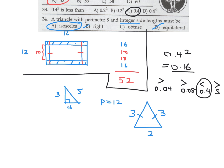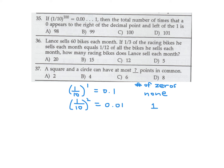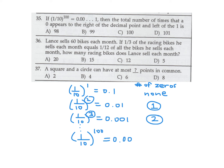1 over 10 to the 100th power — how many zeros appear to the right of the decimal point and left of the 1? Using pattern recognition: 1/10^1 is 0.1 (zero zeros), 1/10^2 is 0.01 (one zero), 1/10^3 is 0.001 (two zeros). The pattern is one less than the exponent. So 1/10^100 has 99 zeros. Number 35 is B.